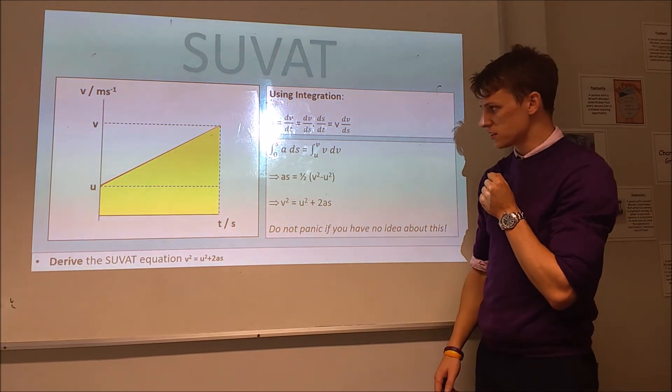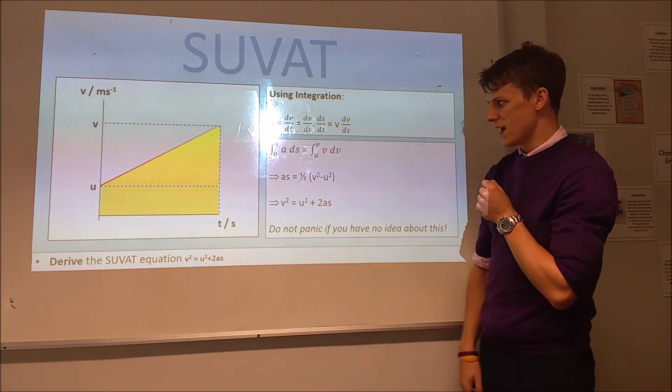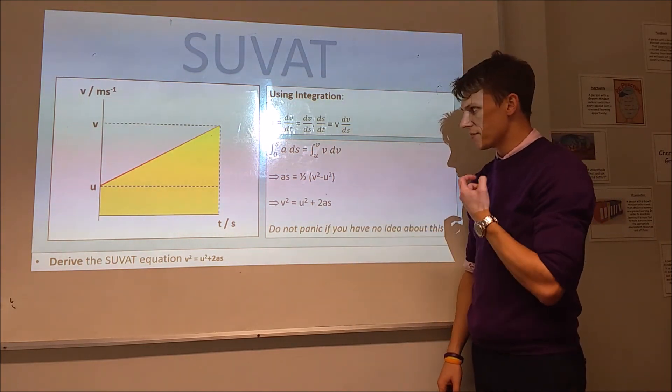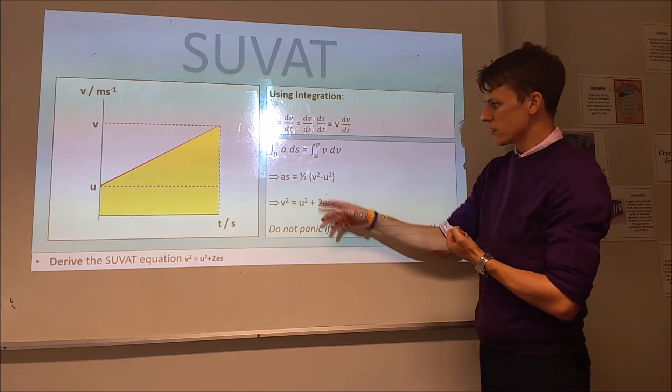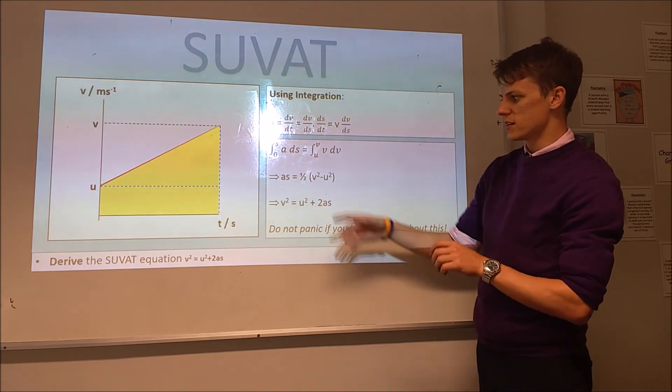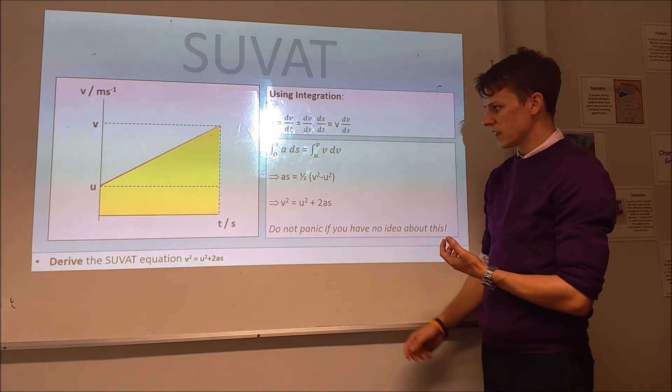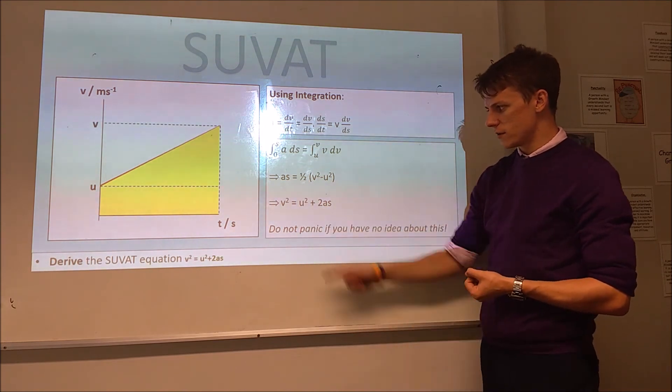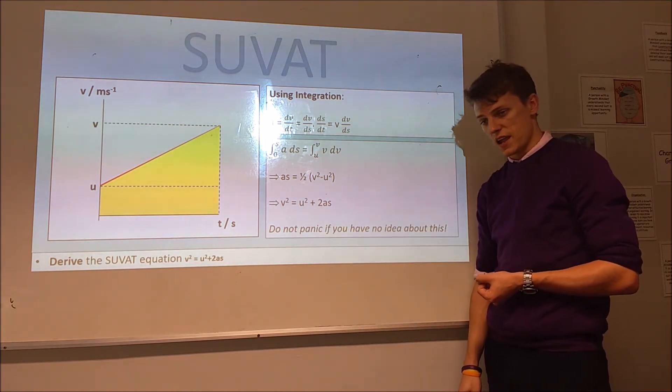So, acceleration is constant, it doesn't change the distance, so that just becomes as. And v is just going to become half v squared when we integrate with respect to v. So, between the limits, that's going to be v squared minus u squared, each of them in half. And we take the two to the other side, and take the u squared to the other side, and we end up with v squared equals u squared plus 2as.